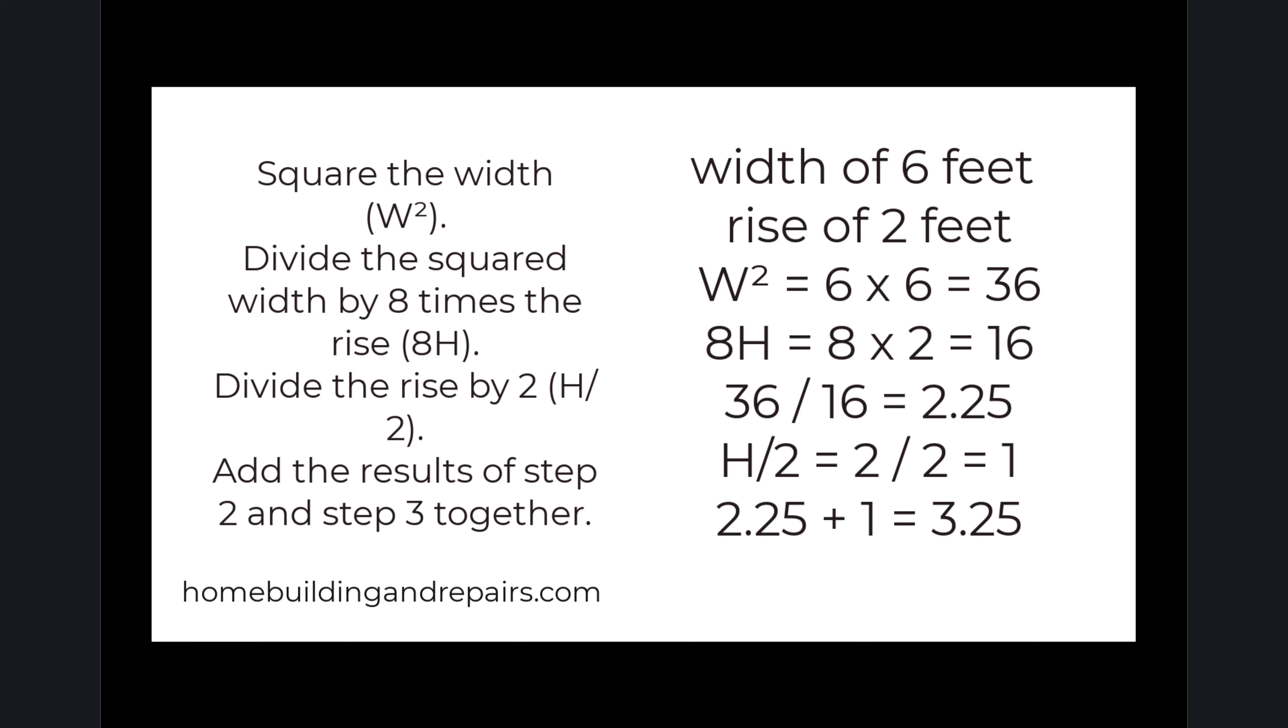So I'm going to square the width. I'm going to multiply six times six. That's going to give us 36. And then eight times the height. The height or the rise is two. So eight times two is 16. Then I'm going to take 36 and divide it by 16. That's going to give me 2.25.